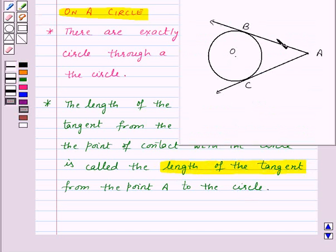So here, AB is the length of this tangent and AC is the length of this tangent.